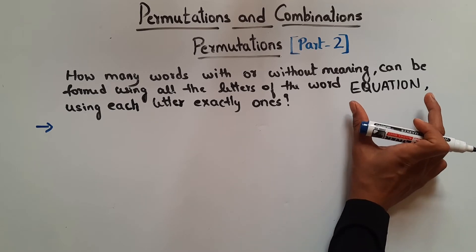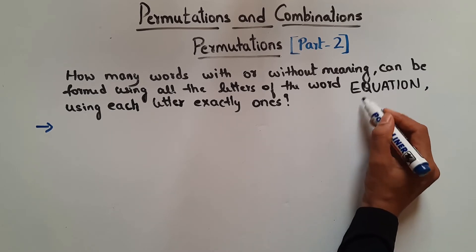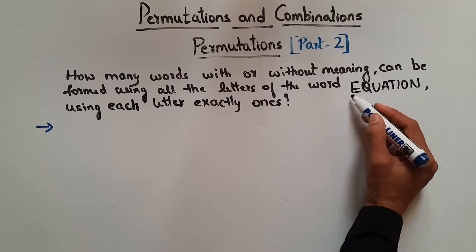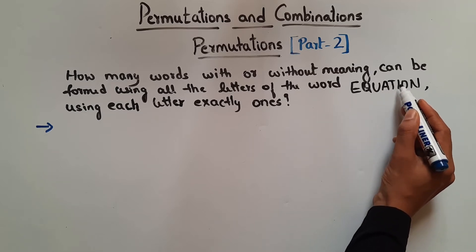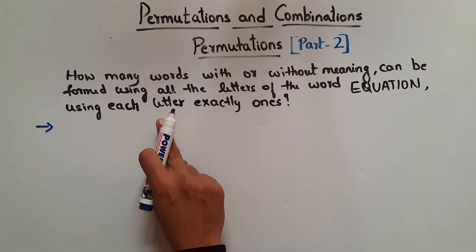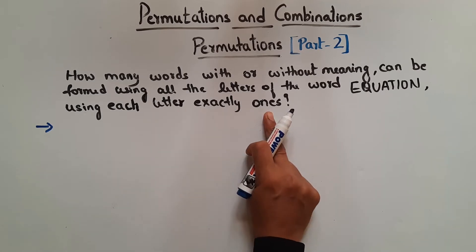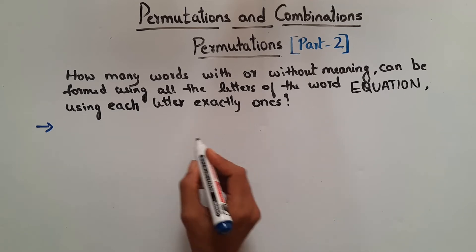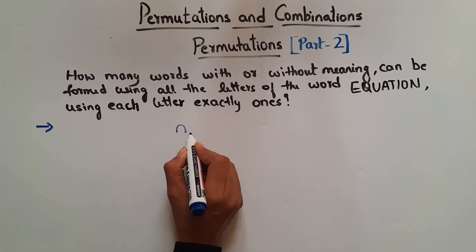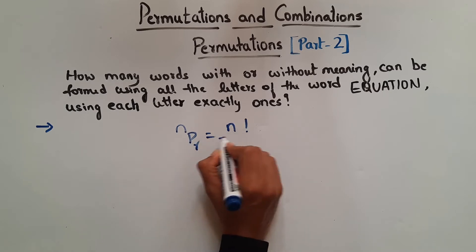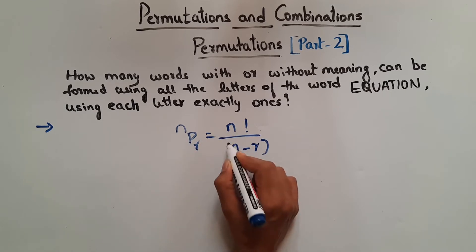So if you see the word EQUATION here, each object is different, right? E, Q, U, A, T, I, O, N — all the letters are different. And they are saying there should not be any repetition while forming the words. So we know when this is the case, NPR is given by N factorial divided by N minus R factorial.